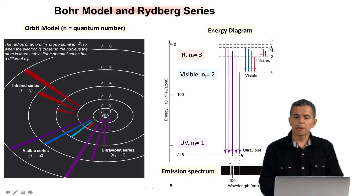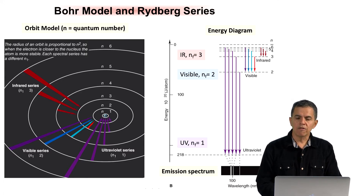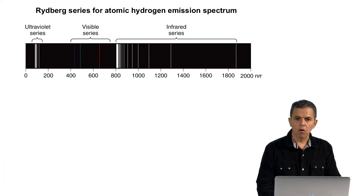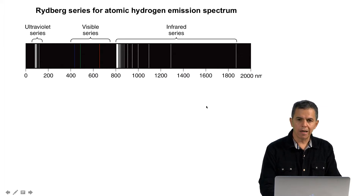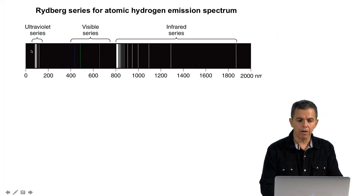As we move to longer wavelengths, this will correspond to transitions that have a shorter change in energy. By observation, it was possible to associate this particular behavior of wavelengths with specific quantum numbers. These specific quantum numbers then relate n numbers to specific positions in the different spectra: the ultraviolet, the visible, and the infrared series.